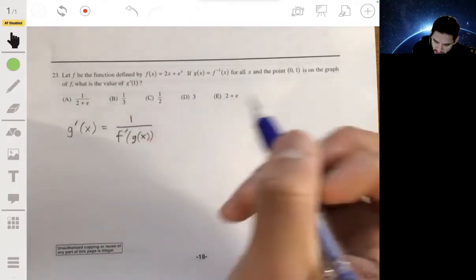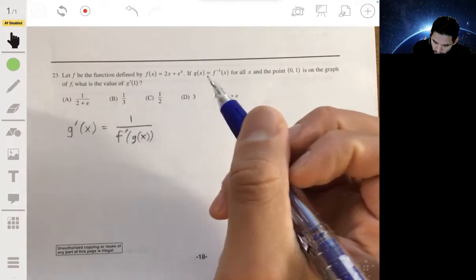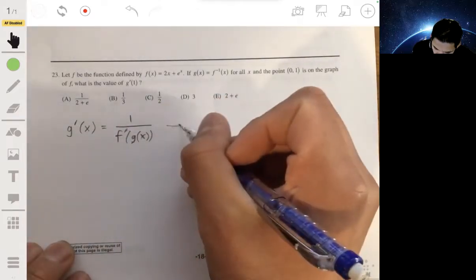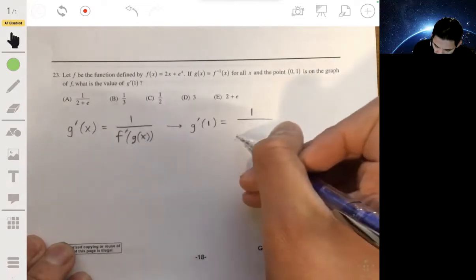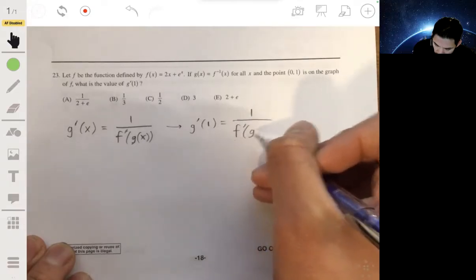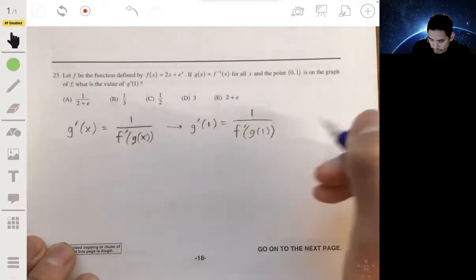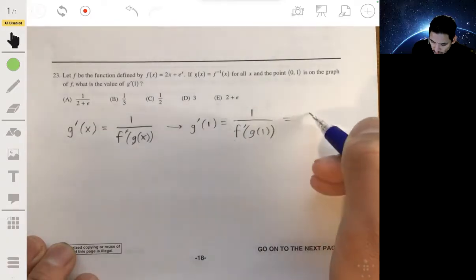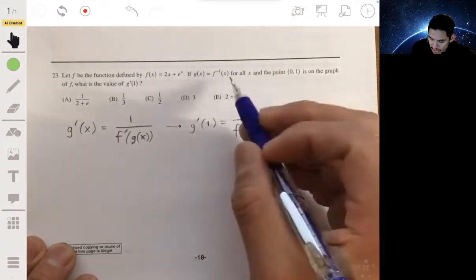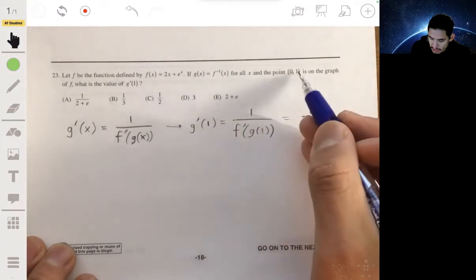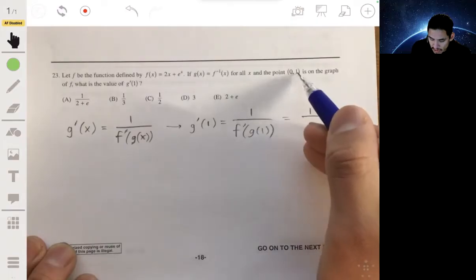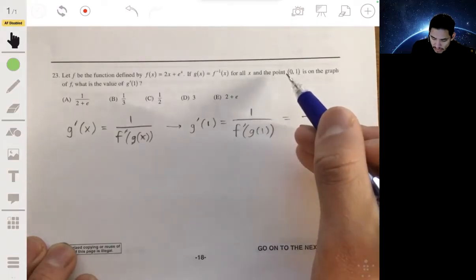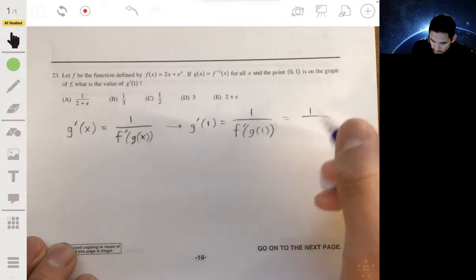We want to find g prime of 1. So g prime of 1 is going to be 1 over f prime of g of 1. Now g of 1, if f and g are inverse functions, that means that g of 1 will be 0 because f is on the graph of f and g undoes f. So instead of going from 0 to 1, g is going to go from 1 to 0.